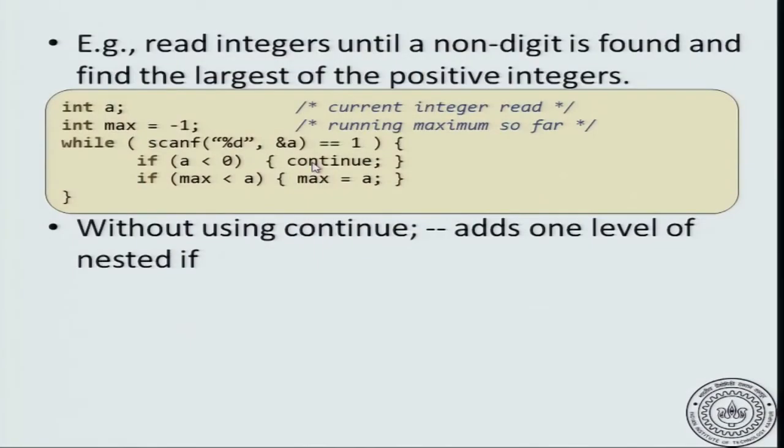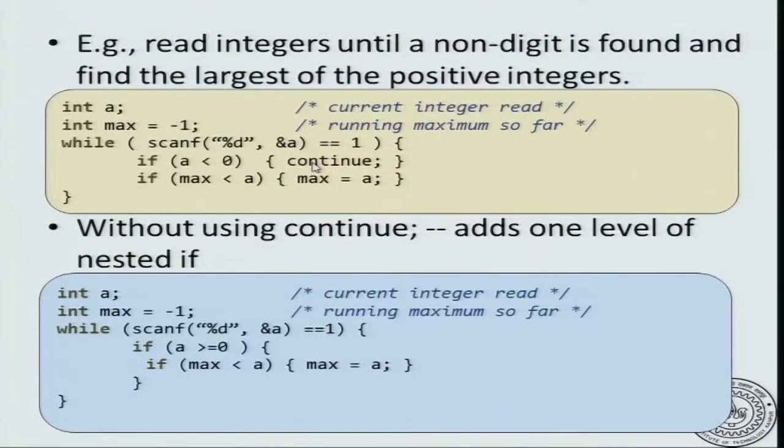Now, as in break, you can also write equivalent code without using the continue statement. Let us try to do that and for doing that all we have to do is make sure that the maximum is updated only if it is a non-negative number. This says if it is a negative number, do not do the next statement. This says if it is a non-negative number, then update maximum if necessary. It can be written with one more level of nested if.